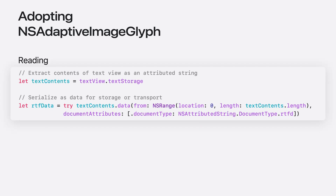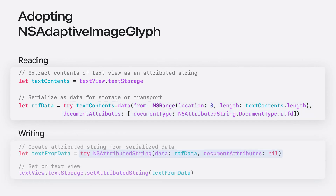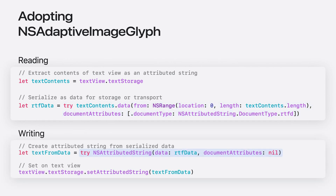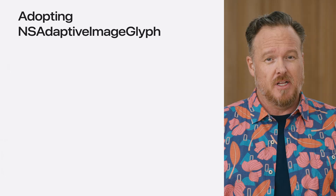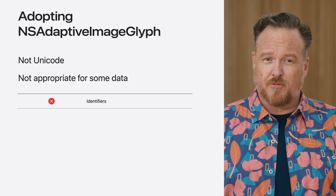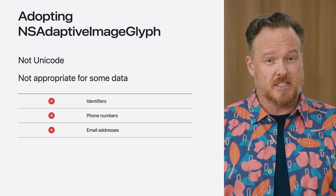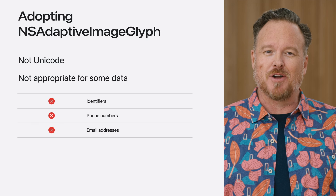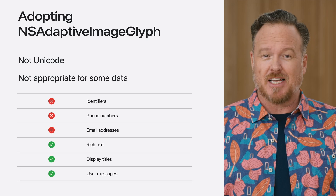Now just as with any rich text, simply serialize the content of the text view into an RTFD data object and store it in your database. When it comes time to display the content again, simply reverse the process and create an attributed string from the data you previously stored. It really is that easy. But it's important to remember that Genmoji are not Unicode and they may not be appropriate for use with text-only items such as email addresses and phone numbers. However, user-created content like blog posts, titles, and messages are just the sort of thing that can really spring to life with support for image glyphs.